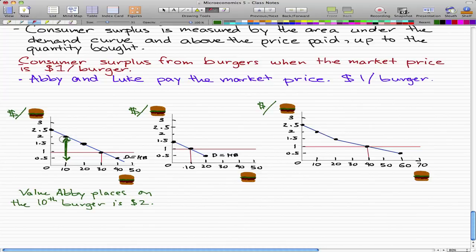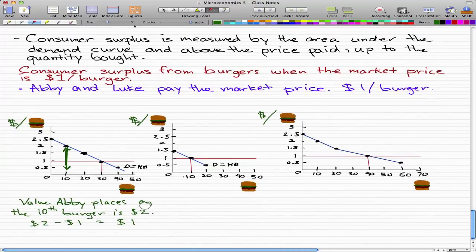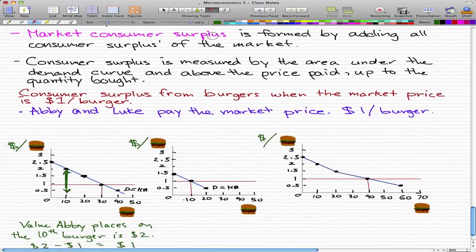At the 10th burger, Abby values the burger at $2. So we take $2 minus $1 and get $1. That's the consumer surplus we were talking about.